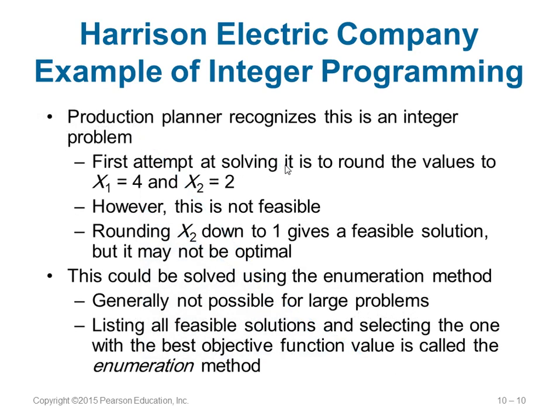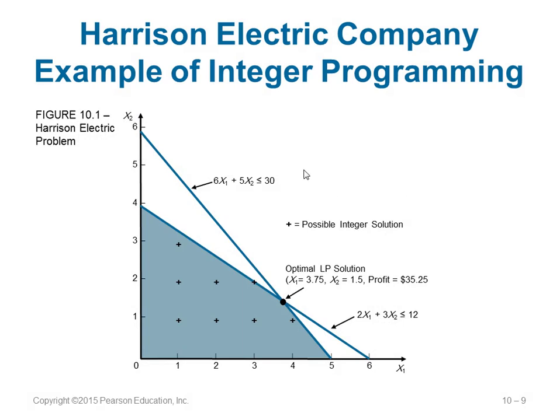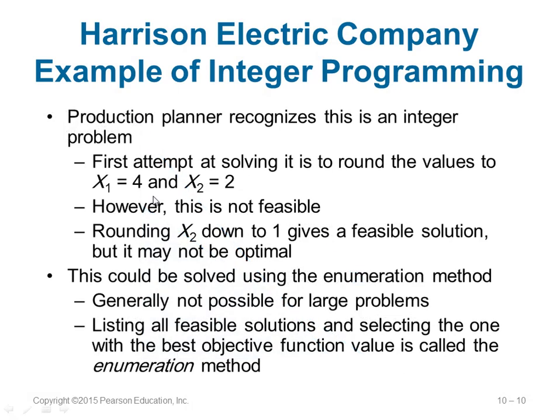Here there is a problem: the planner considers this an integer problem, so he cannot use x1 = 3.75 and x2 = 1.5. He must use integer values. If he tries x1 = 4, x2 = 2, he gets an infeasible solution. If he tries x2 = 1, he gets a feasible but not optimal solution. The process of trying all feasible options is called the enumeration method, but enumeration is not practical for large problems.